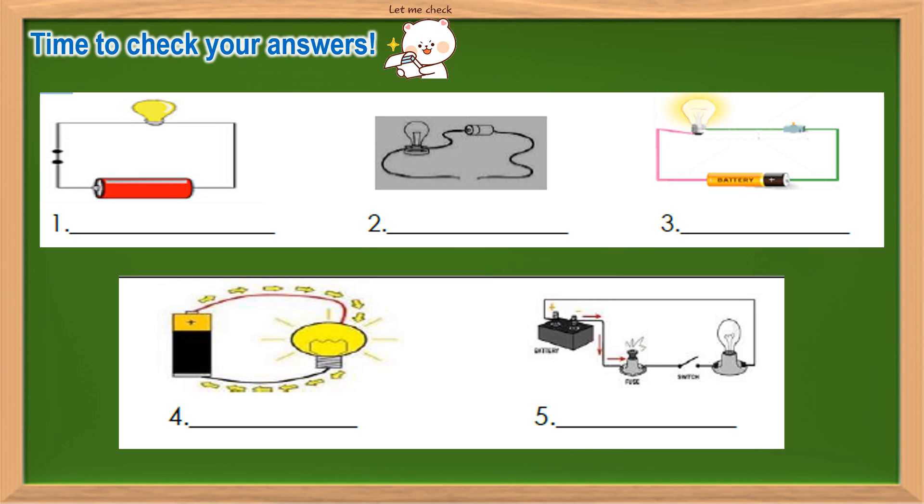Let's check your answer. Number 1, if you wrote closed circuit, you are correct. Number 2, if you wrote open circuit, you are right. Number 3, if you wrote closed circuit, that's another point for you. Number 4, if you wrote closed circuit, perfect. Number 5, if you wrote open circuit, you are correct.